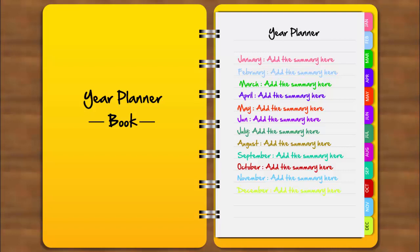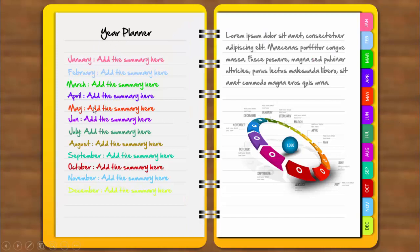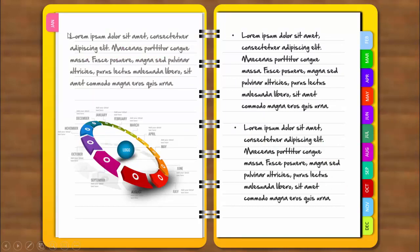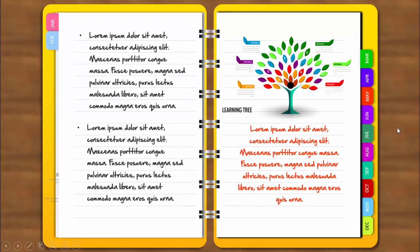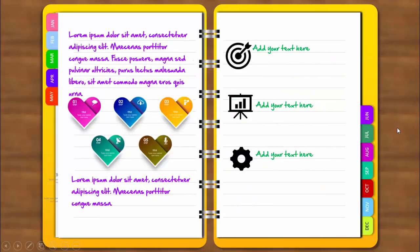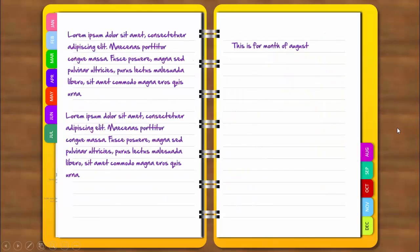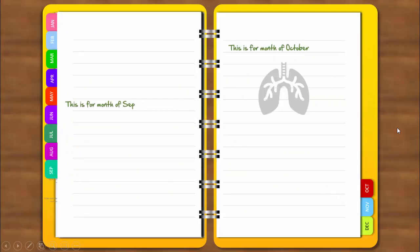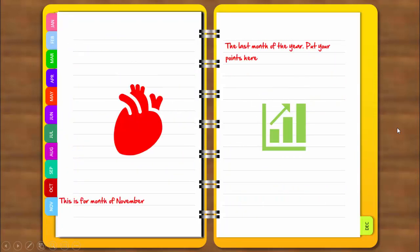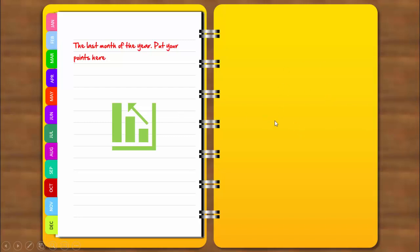Let me show you how it works. When I click, you can see the page turns and the first page — January — is visible. You can add text, images, whatever you want. When I click again, January moves to the left and the February data is visible. On each next click it keeps moving, cycling through August, September, October, November, and December.